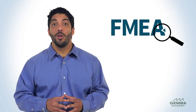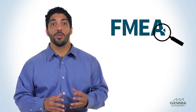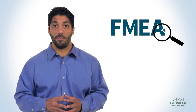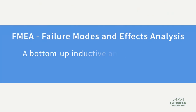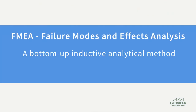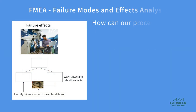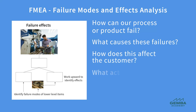Hello and welcome. Failure Modes and Effects Analysis, abbreviated as FMEA, is a structured approach for identifying the ways that a product or process can fail, what causes the failure, and how this affects the customer. FMEA is a bottom-up inductive analytical method. This means that we study the failure modes of individual components within a system, identify their effects, and trace their causes. After estimating the risk associated with specific failures and causes, the FMEA helps us to prioritize and take actions to reduce the risk.